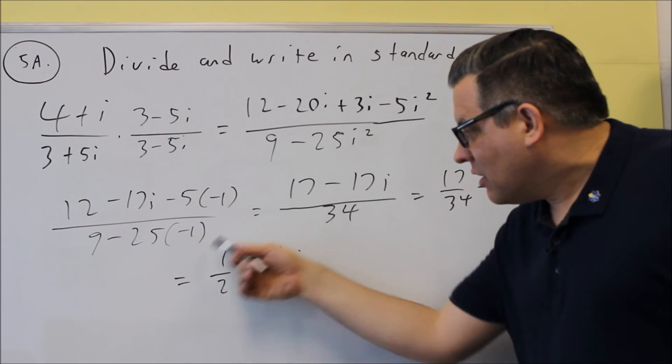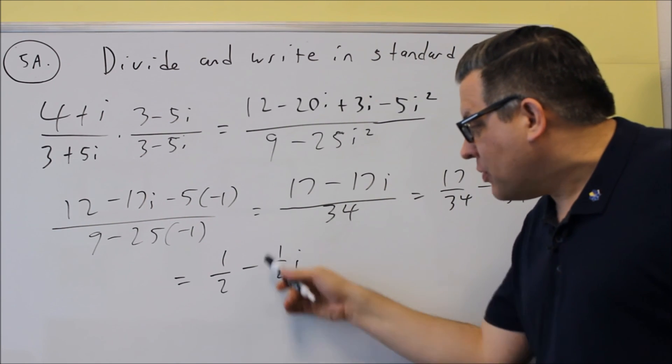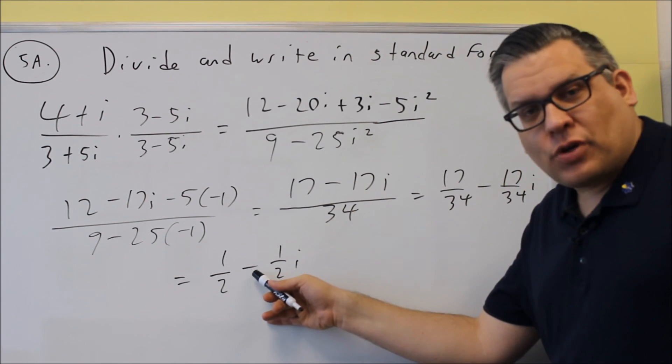This is in standard form because you got the, this is your a and then this is your b part that comes second. Doesn't matter if it's plus or minus, that would still be written in standard form.